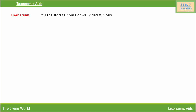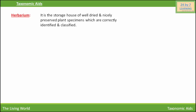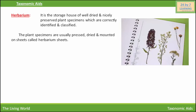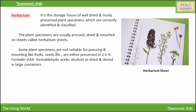Herbarium is the storage house of well-dried and nicely preserved plant specimens which are correctly identified and classified. The plant specimens are usually pressed, dried, and mounted on a sheet called a herbarium sheet. This is a herbarium sheet upon which pressed and dried plant specimens are mounted. Some plant specimens are not suitable for pressing and mounting, like fruits.